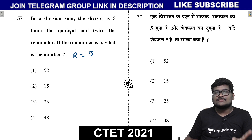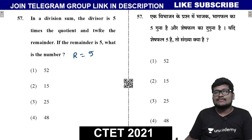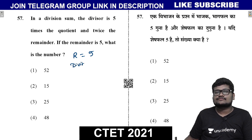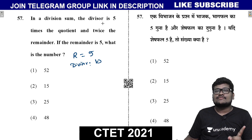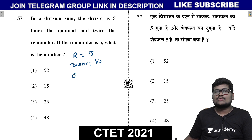The division is 5 times the quotient; the quotient is 5 times and twice the remainder. The remainder is double — if double is 5, then divisor = 2 × 5 = 10. So the divisor is 10. The divisor is 5 times the quotient, so quotient is 5 times. The remainder is 5, so divisor = 10.